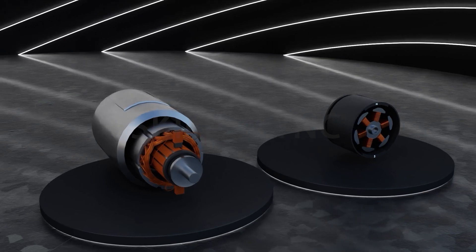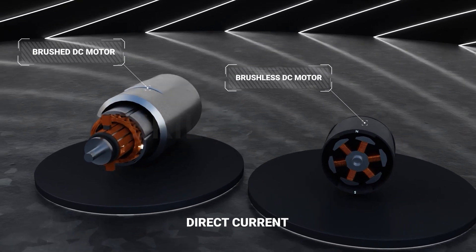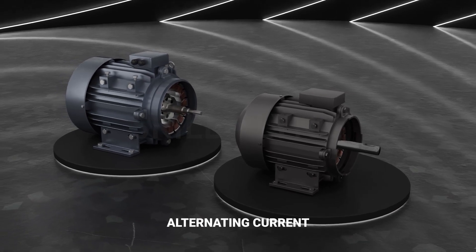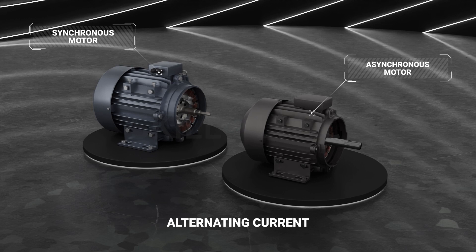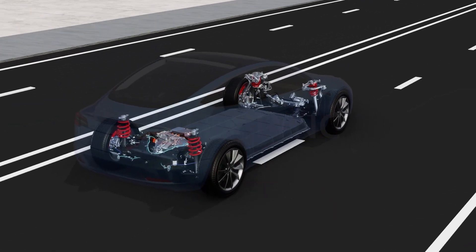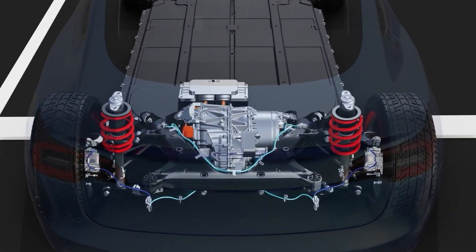DC motors are powered by direct current and include brushed and brushless DC motors. AC motors are powered by alternating current and include synchronous and asynchronous motors. While the electrical energy is derived from a power source like a battery pack, the resulting mechanical energy is what gives us rotational motion.